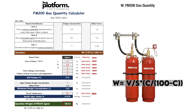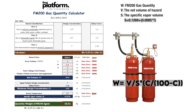W is the FM 200 gas quantity in kilograms. V is the net volume of the hazard structure, calculated considering the gross volume of the room minus the volume of fixed structures. S is the specific vapor volume, which we can get by applying an equation using the room temperature. C is the minimum design concentration, selected based on the hazard classification and multiplied by a safety factor.